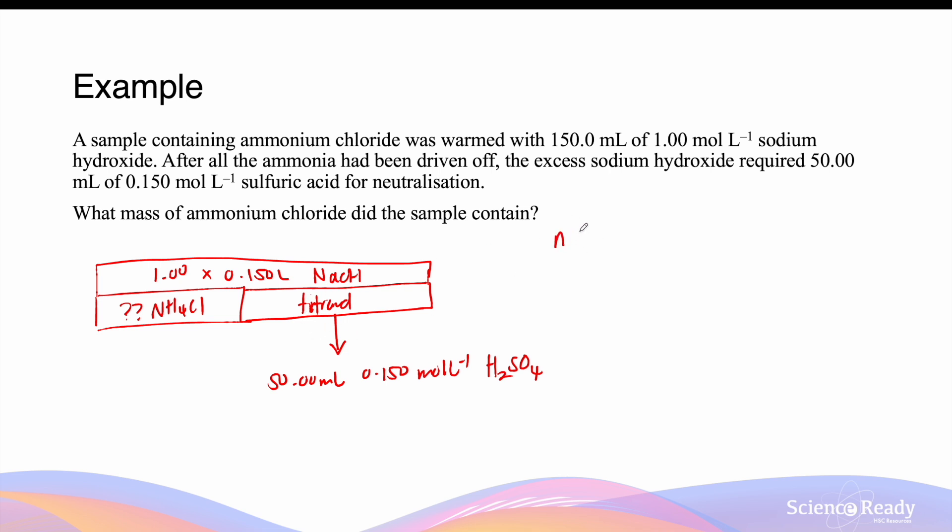We want to find out how many moles of sulfuric acid was required for neutralization. So 0.15 mol per liter for the concentration multiplied by the volume, which is 50 mL, and this is 7.5 times 10 to the minus 3 moles. Keep in mind that sulfuric acid is a diprotic acid, so its reaction with sodium hydroxide is not in a 1 to 1 ratio. So it is important to write a balanced chemical equation. We need to put 2 here in front of sodium hydroxide and 2 in front of the water.